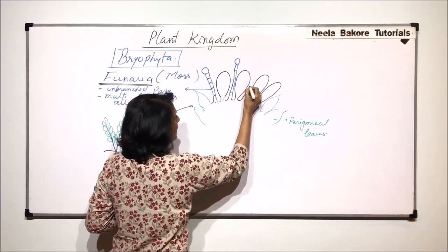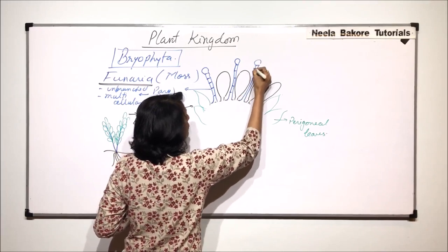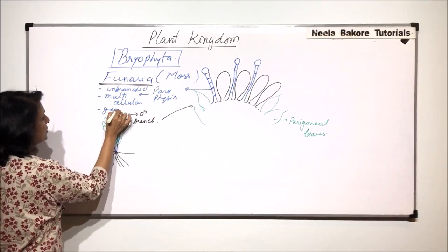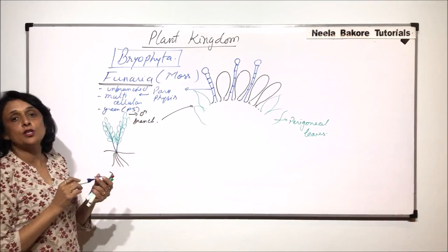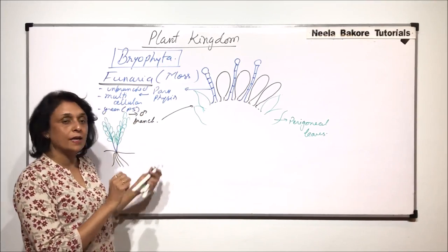These paraphysis are green and photosynthetic. They are green in color and they perform photosynthesis. There are two more functions which are performed by these paraphysis which we'll take up later.